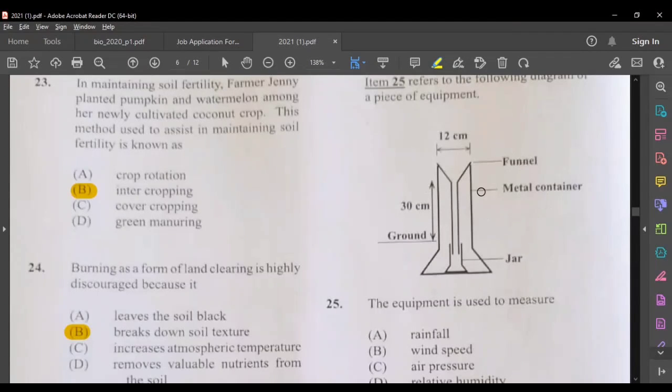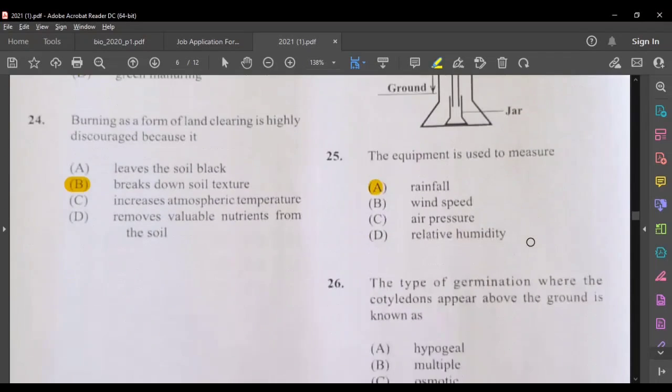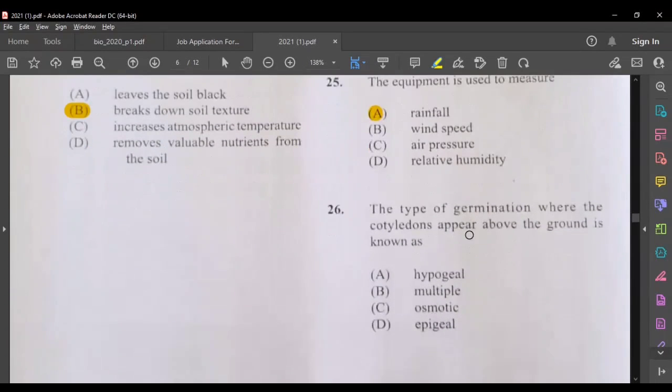Question 25, the equipment is used to measure, this equipment here, well, this looks like a rain gauge, so it should be checking the amount of rainfall, measuring the amount of rainfall. Question 26, a type of germination where the cotyledons appear above the ground, that's epigeal. Hypogeal, the cotyledon will remain below the ground.